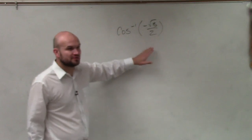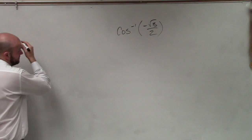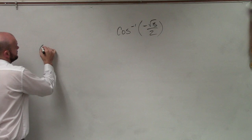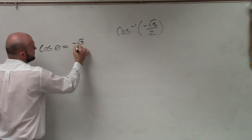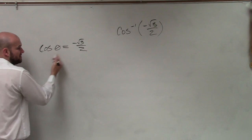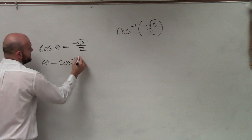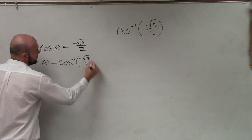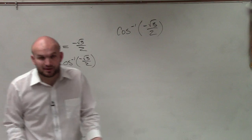If you have something like the cosine of theta equals negative square root of 3 over 2, obviously to solve for theta, you'd say theta equals the cosine inverse of negative square root of 3 over 2. And that's where this problem is coming through — we're looking for an angle.